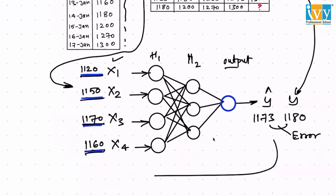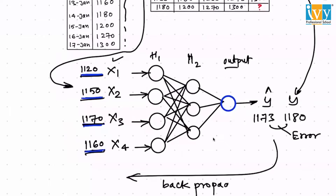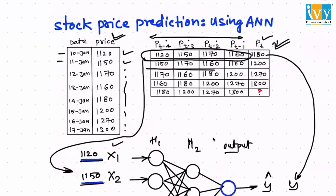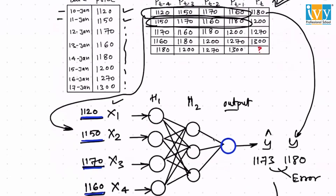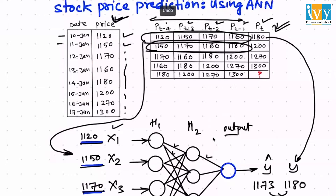Then you do the backpropagation, and then you learn the next row, the third row, the fourth row, and so on and so forth. You finally arrive at the final weights of all of these connections.